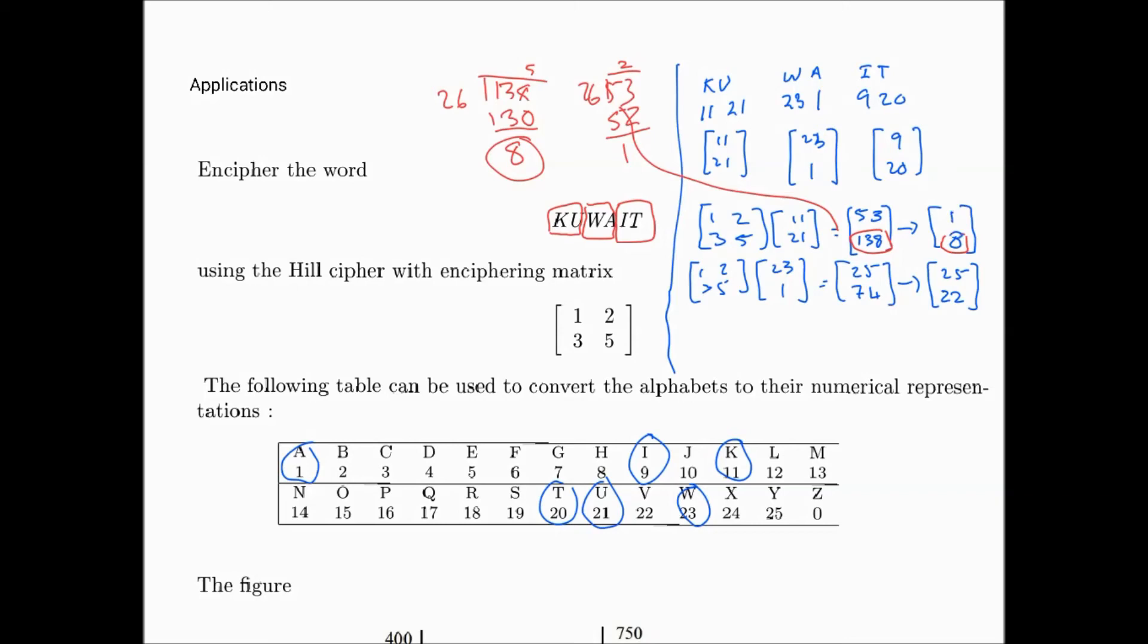Let me show you the others as well. 25 doesn't require anything. 74 is larger, so 74 divided by 26, we can go two times. 26 by 2 gives us 52, so 74 minus 52 gives us 22. There you'll see the 22 here.